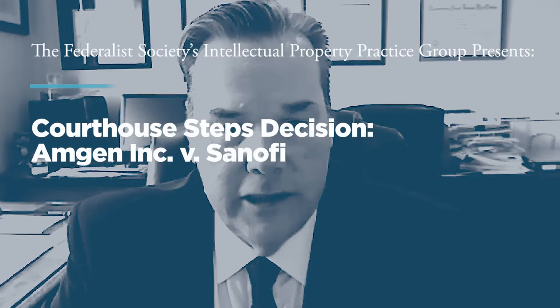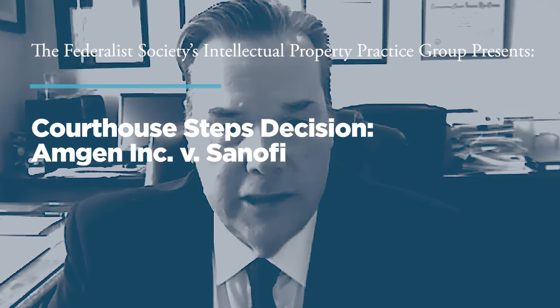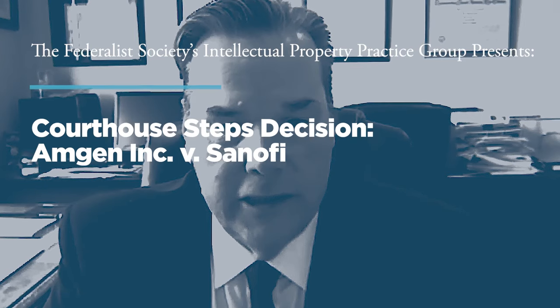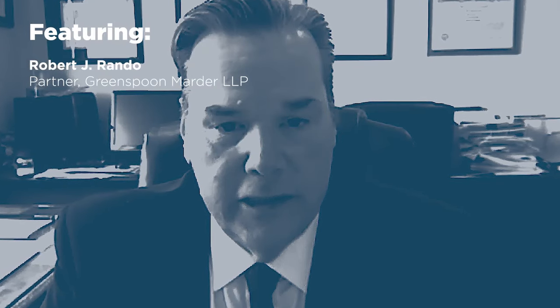Hello and welcome to this Federalist Society virtual event. My name is Jack Derwin and I'm Associate Director of the Practice Groups here at the Federalist Society. Today we're excited to host a Courthouse Steps discussion on last week's Supreme Court ruling in Amgen v. Sanofi, featuring Mr. Robert Rando. Rob is a partner with Greenspoon Martyr LLP's Intellectual Property Department, where he focuses his practice on patent and other intellectual property infringement disputes. Rob has more than 30 years of civil litigation experience at the trial and appellate court levels and has served as counsel of record on a number of amicus briefs, including one in the case we're discussing today, filed on behalf of the New York Intellectual Property Law Association, of which Rob is president.